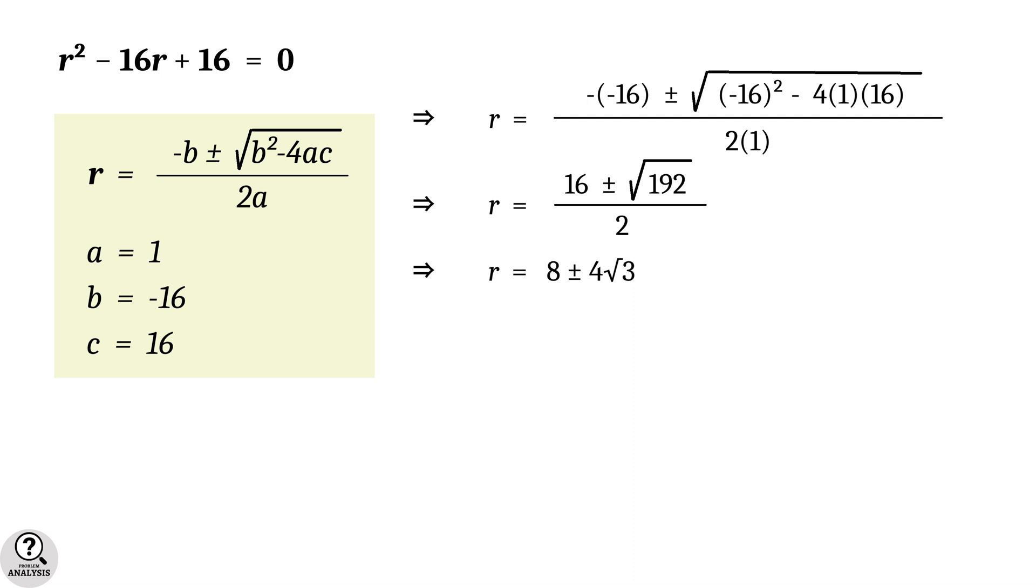We know that r is the radius of the circle and so it should be positive. The value 8 + 4√3 is positive. Now, note that 4√3 is approximately 6.928, which is clearly less than 8. So, 8 - 4√3 is also positive.